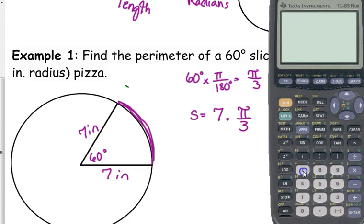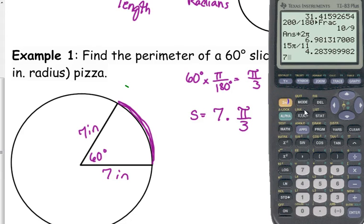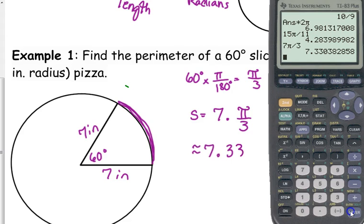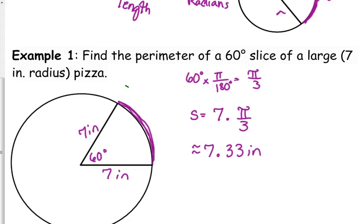So the length of our crust is approximately 7.33 inches. Is that our final answer? No, the perimeter. How do we find the total perimeter of this pizza?